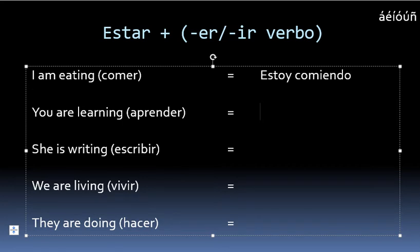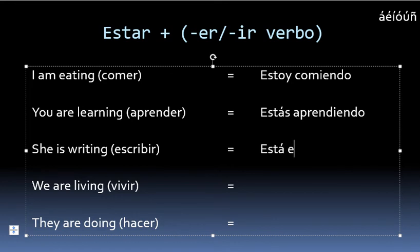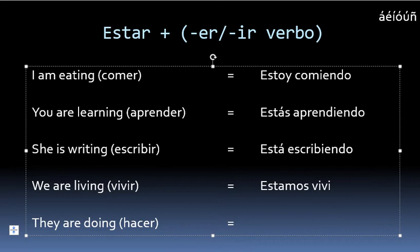For 'you are learning,' you could say estás aprendiendo. The phrase 'she is writing' could be translated as está escribiendo. For 'we are living,' you could say nosotros estamos viviendo. And if you want to say 'they are doing,' that could be están haciendo.